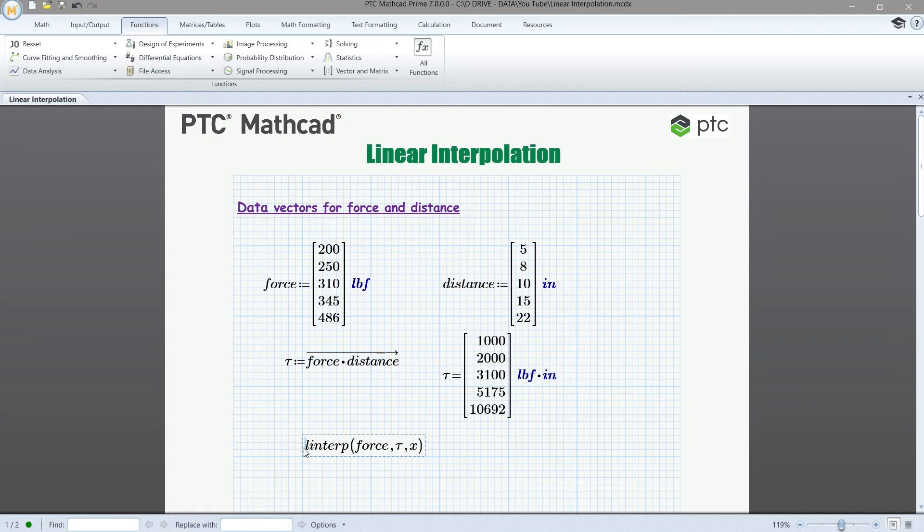So now we're building the model. And so we're going to assign that to a function. So we need to give the function a name, so we can just call it torque. And that is going to be a function of our independent variable x. Now we're all done.